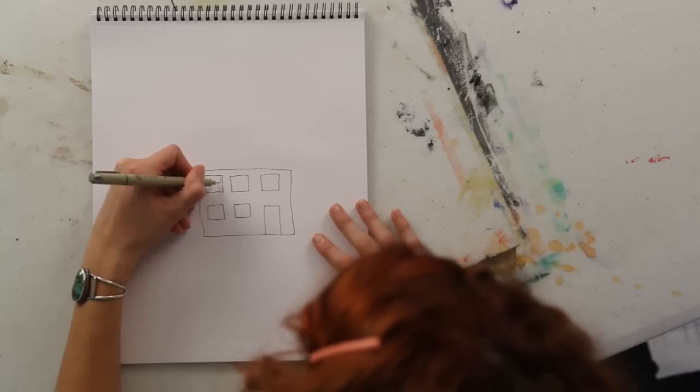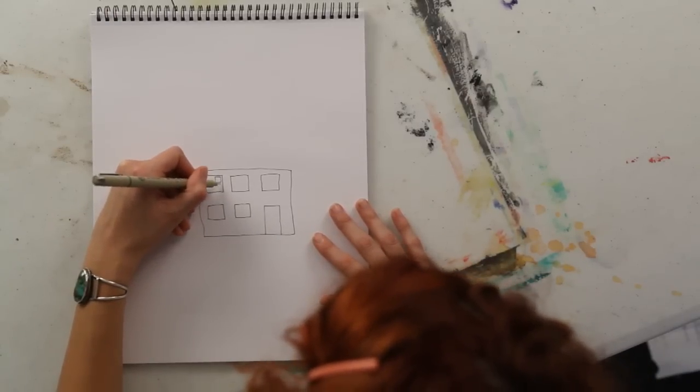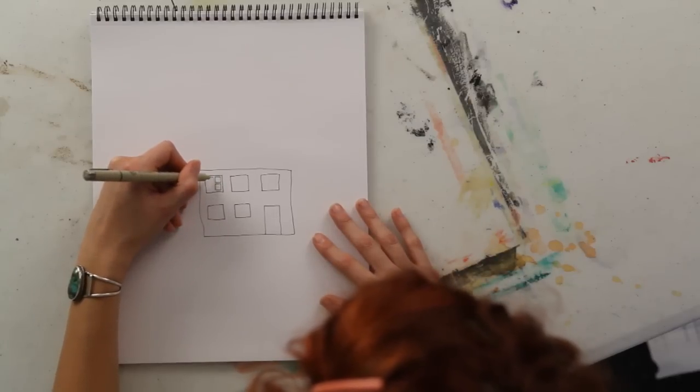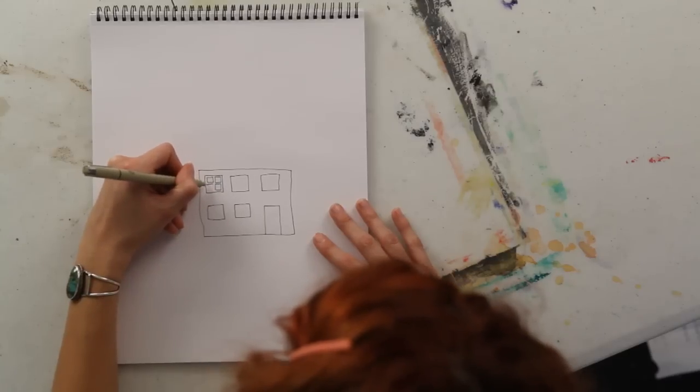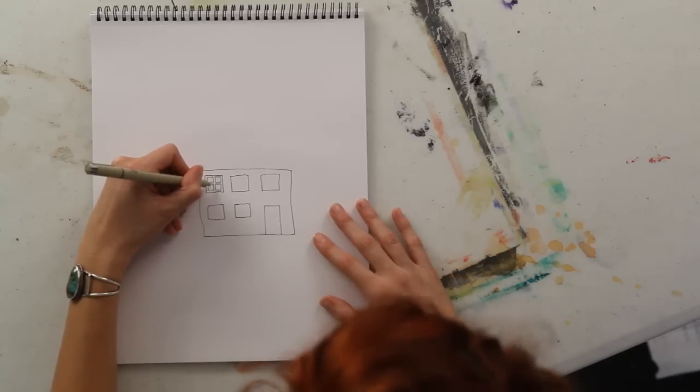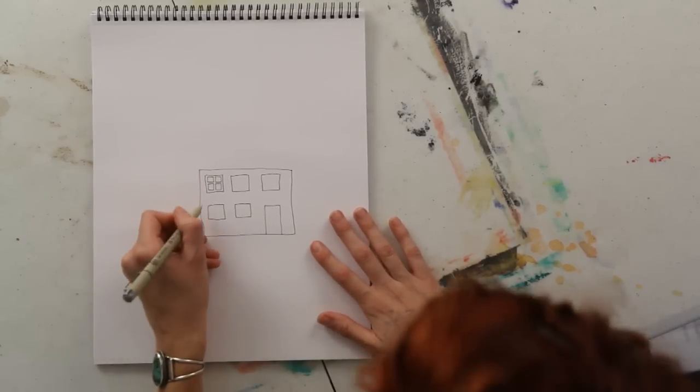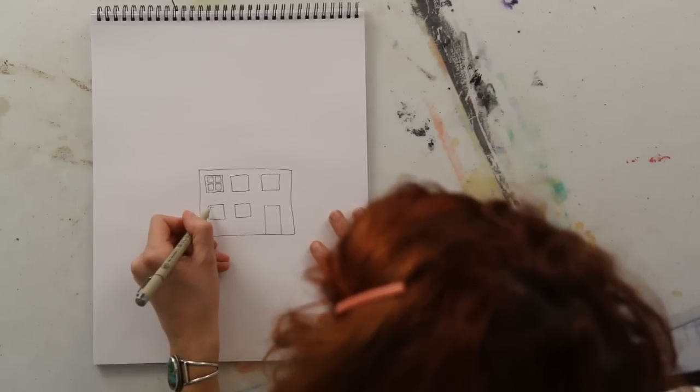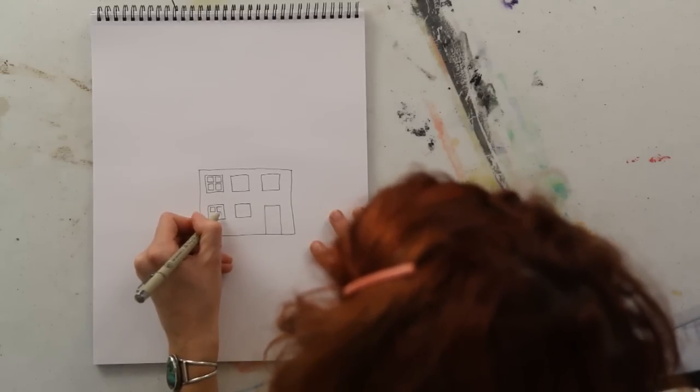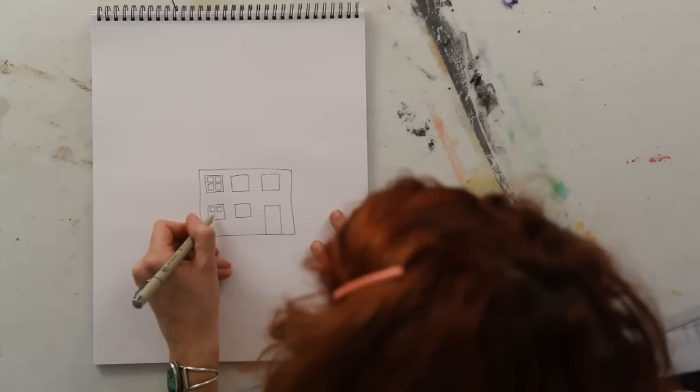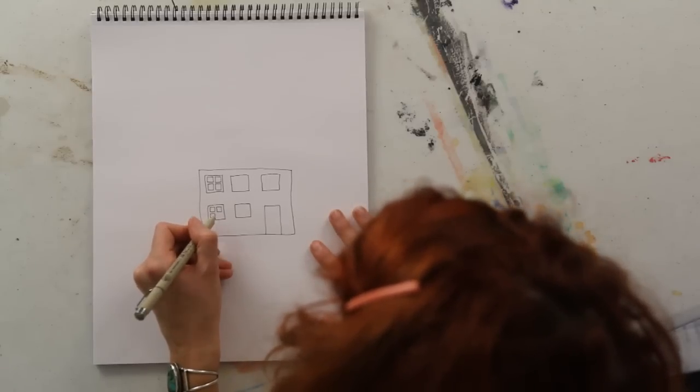Then, within those squares, you're going to put four squares in each of them to create a window effect. And once again, this is open for experimentation. You could put a bunch of squares into each window. You could have the windows be rectangular. You could even have the windows be circular.